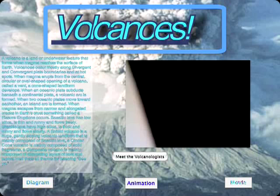When magma escapes from the narrow and elongated cracks in Earth's crust, something called a fissure eruption occurs. Basaltic lava has low silica, is thin and runny, and flows freely. Granitic lava has high silica, is thick and flows slowly. A shield volcano is a huge, gently sloping volcanic landform mainly composed of basaltic lava. A cinder cone volcano is mainly composed of solid fragments. A composite volcano is mainly composed of alternating layers of lava and tephra.